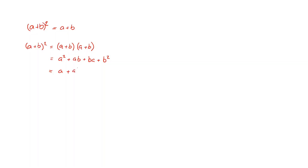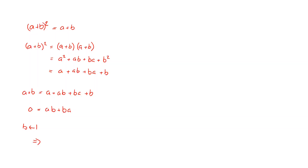So the expansion gives us a plus ab plus ba plus b. Now combining both expressions, a + b must equal a + ab + ba + b. Using the cancellation law, we get that zero equals ab plus ba. Since this holds for all elements, we can substitute b equals one, which gives us zero equals a plus a — which is exactly what we wanted to prove.